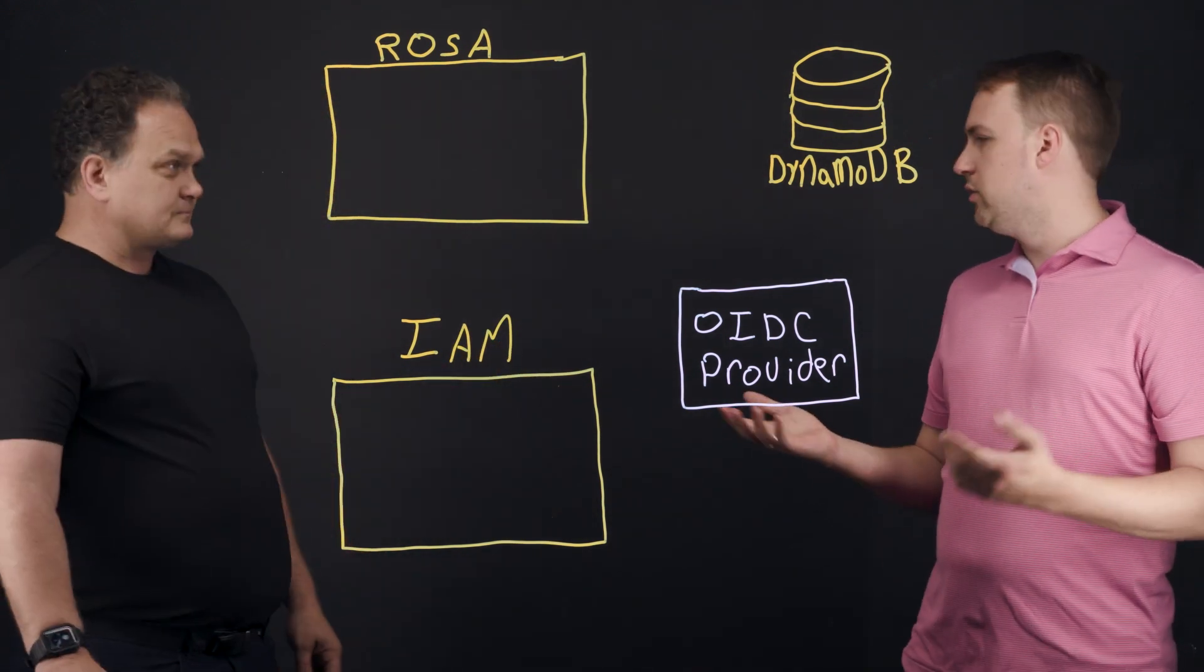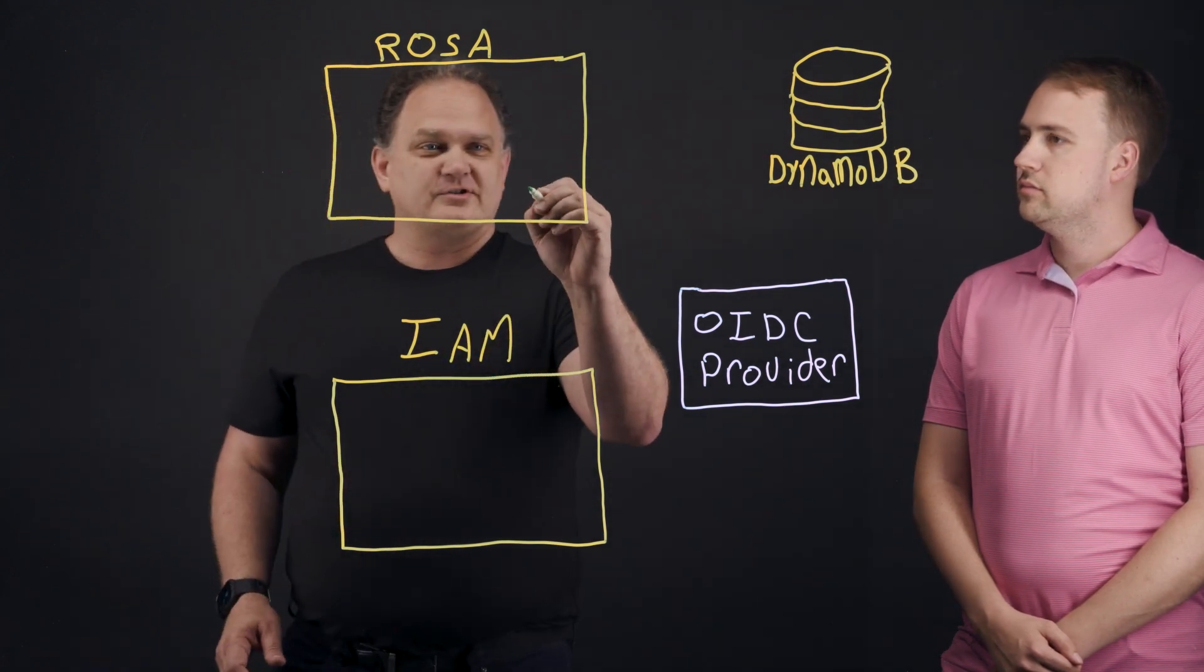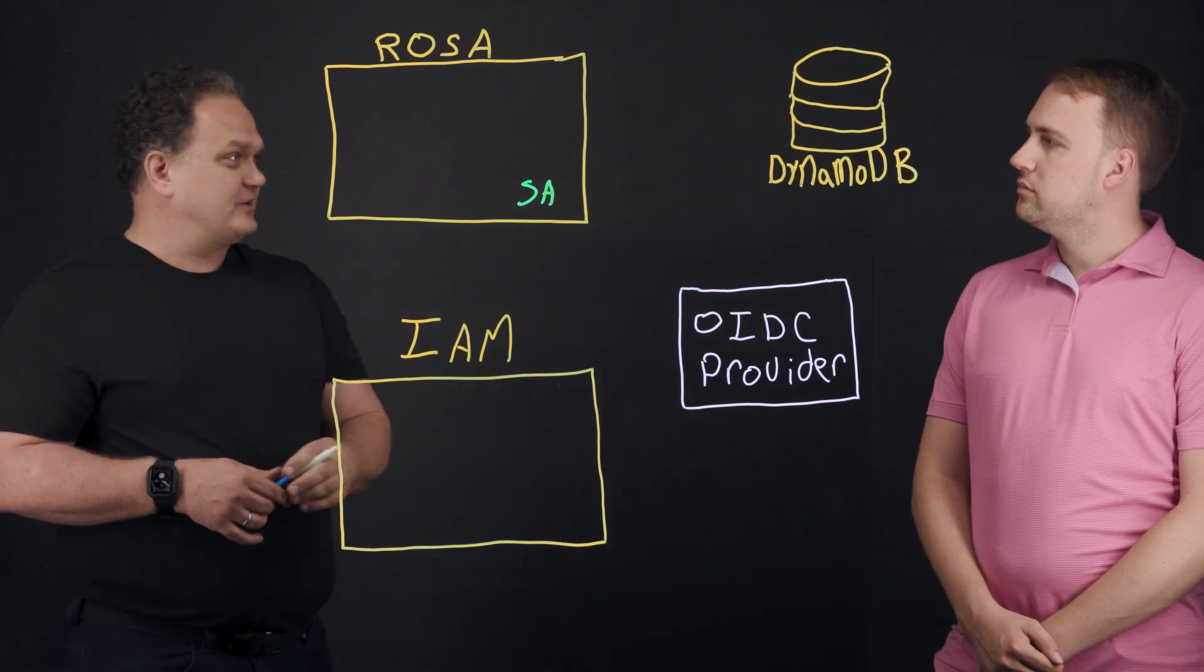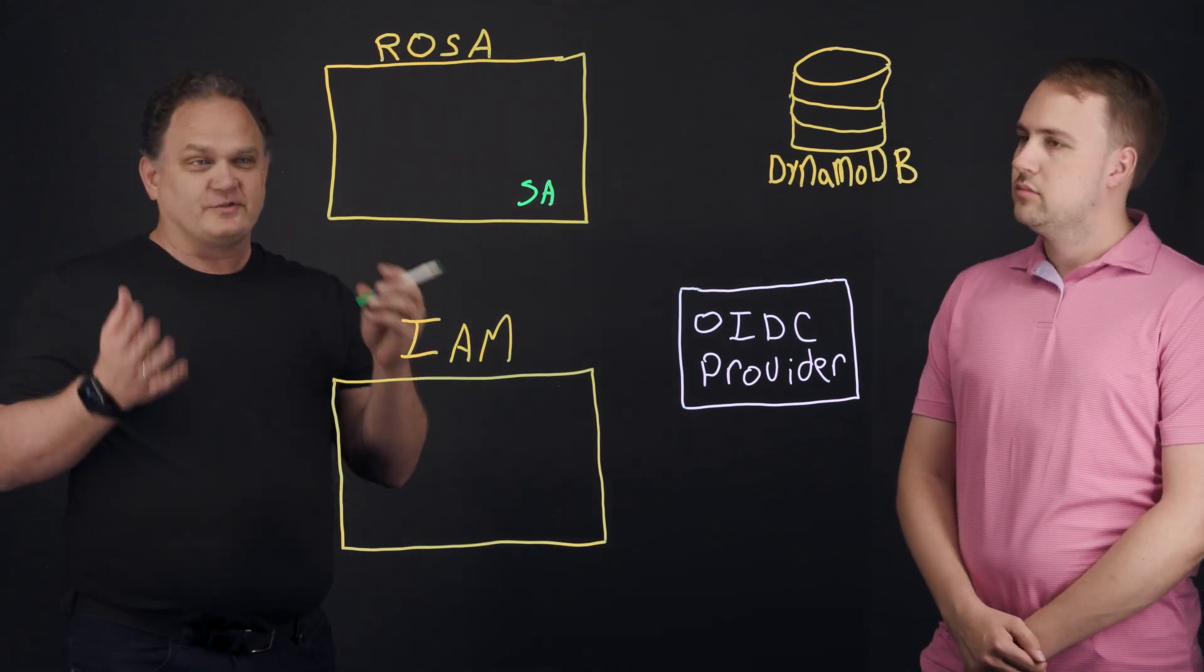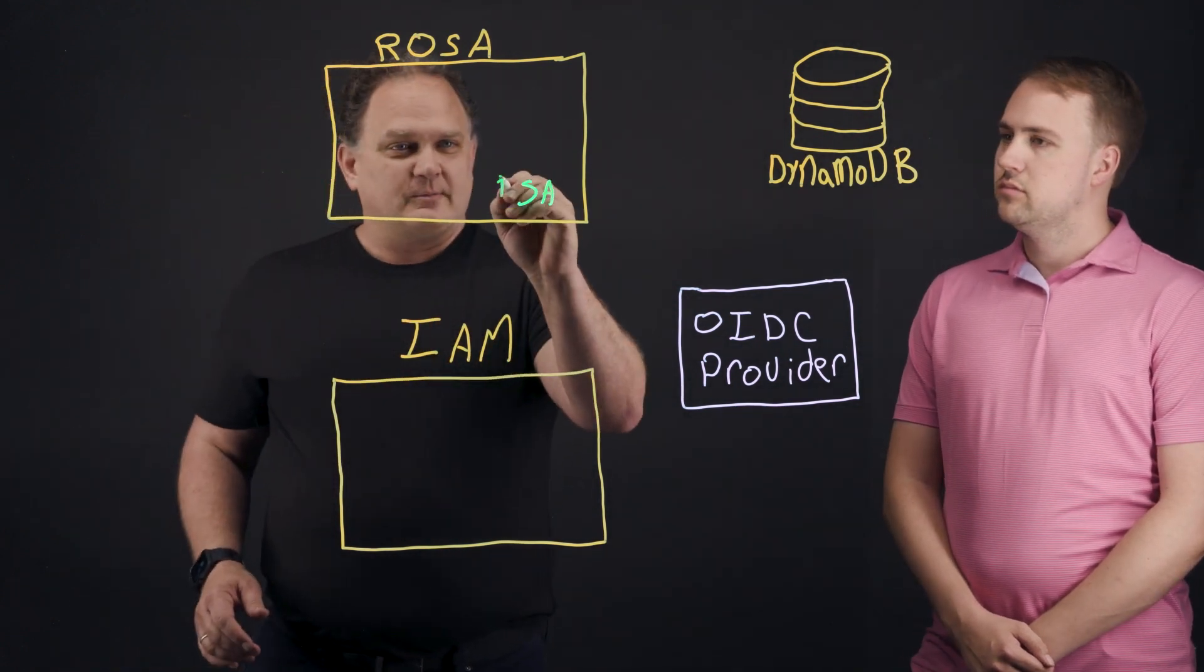Awesome. Well, how does it really work? So it works by starting at ROSA. We're going to first create a service account. And this is nothing new for all OpenShift applications that need special permissions, we recommend using a service account to run the application. So after we have the service account, we'll put a number one there.